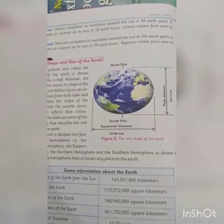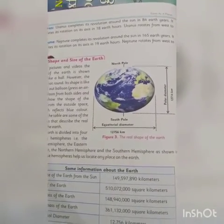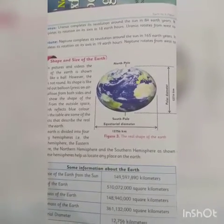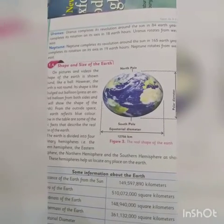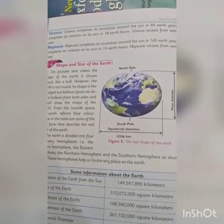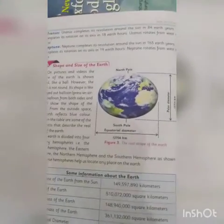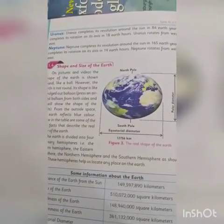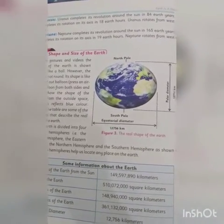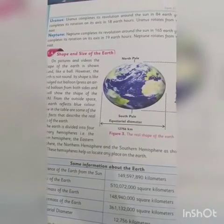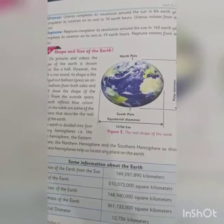Then comes Uranus. Uranus completes its revolution around the sun in 84 Earth years, and it completes its rotation on its axis in 18.5 Earth hours. Uranus rotates from west to east.